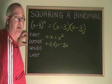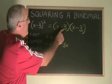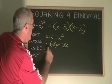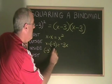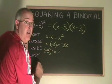The inside terms are this negative 3 and this x. Negative 3 times x gives another -3x.